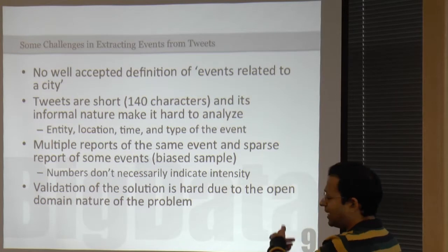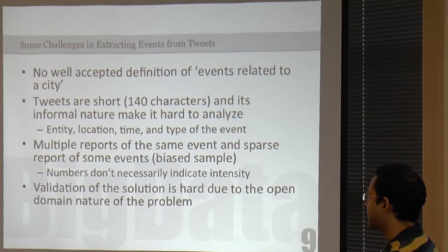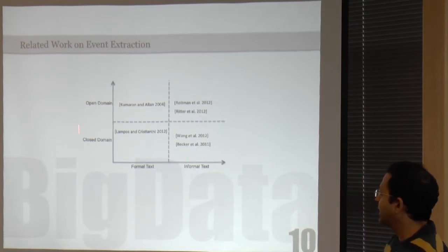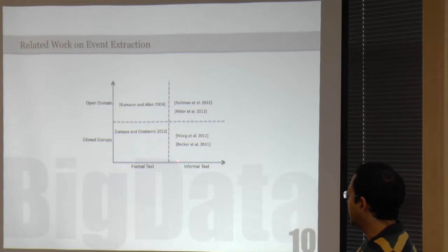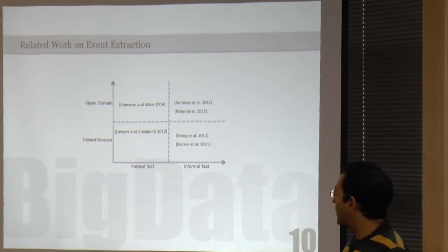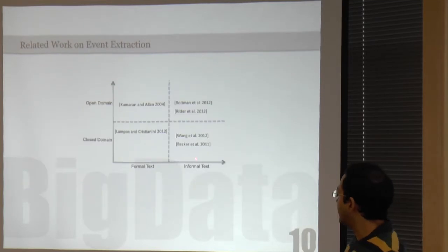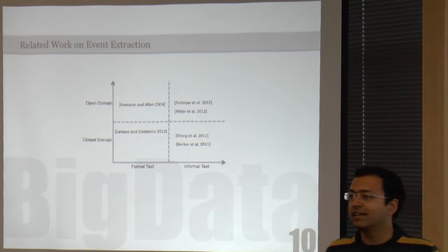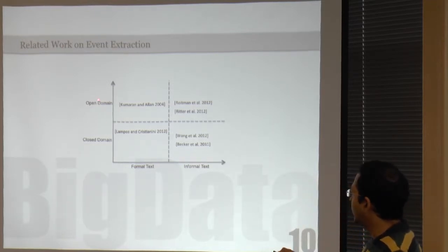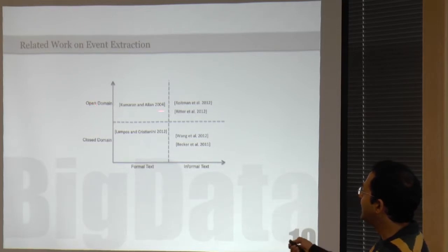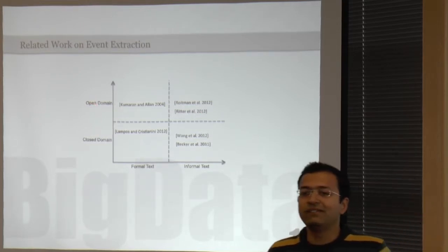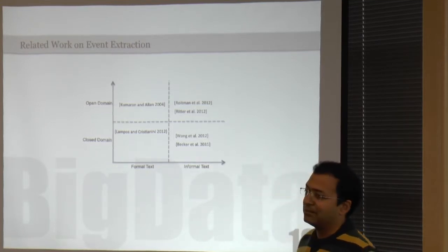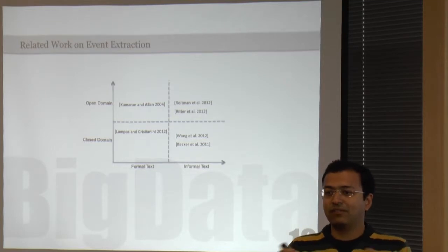There are various challenges in event extraction. In event extraction, one challenge is that I'm going to use Twitter, which falls under informal text as opposed to formal text like news articles. There is also open domain versus closed domain. Open domain means you don't know the event types to start with — in a city, I don't know what the event types are. Closed domain is where you already know a set of events you are interested in.